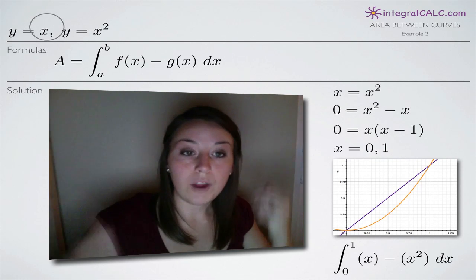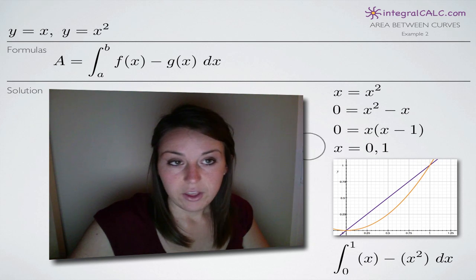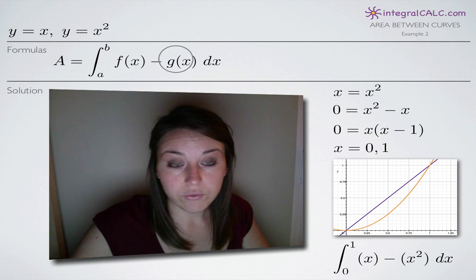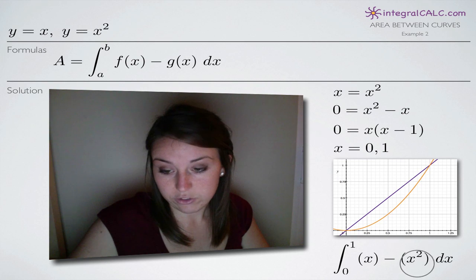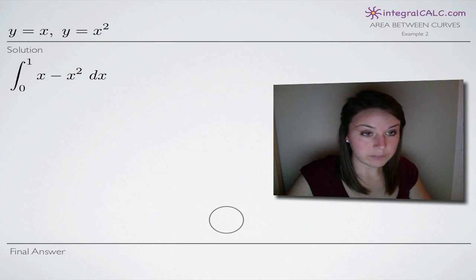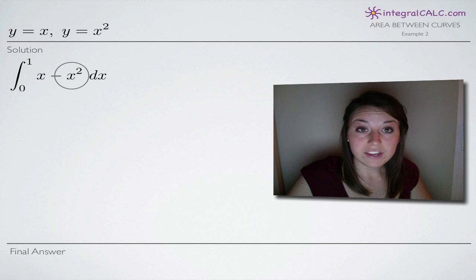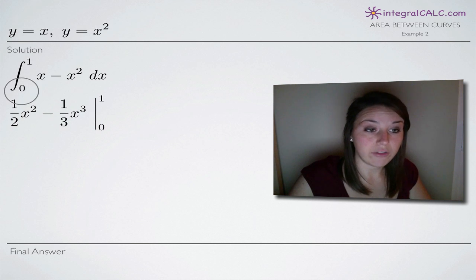So we plug in x here for f of x, which means we're plugging in x squared for g of x. So we plug in x squared down here for g of x. Now to simplify this equation or this integral, we just took away the parentheses here. We end up with x minus x squared and this is simple enough to integrate right away. So what we're going to end up doing is integrating and then evaluating on the range zero to one.